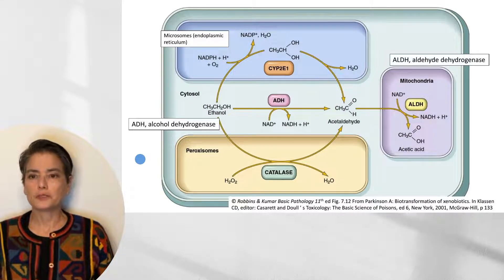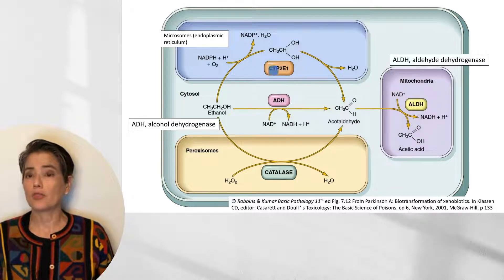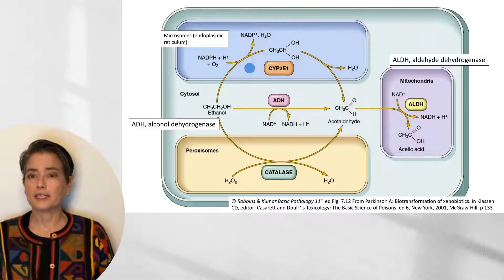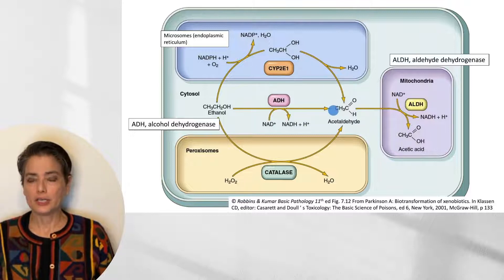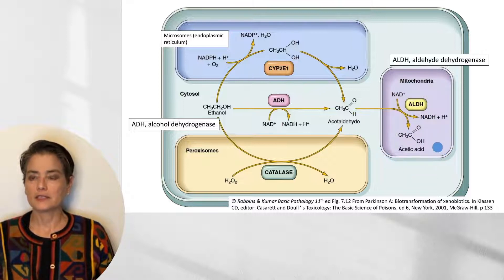Looking at a figure from Robinson-Kumar Basic Pathology, we can see a hepatocyte. An interesting feature of alcohol metabolism is that these three enzymes work in different compartments. Alcohol dehydrogenase in the cytosol transforms ethanol into acetaldehyde. All three enzymes will generate acetaldehyde, which is a toxic metabolite. In the microsomes — part of the endoplasmic reticulum — cytochrome P450, primarily the CYP2E1 isoform, also generates acetaldehyde. In the peroxisome, using hydrogen peroxide, catalase generates acetaldehyde and water. Once acetaldehyde is generated, it moves into the mitochondria, where aldehyde dehydrogenase metabolizes it to the non-toxic substance acetic acid.